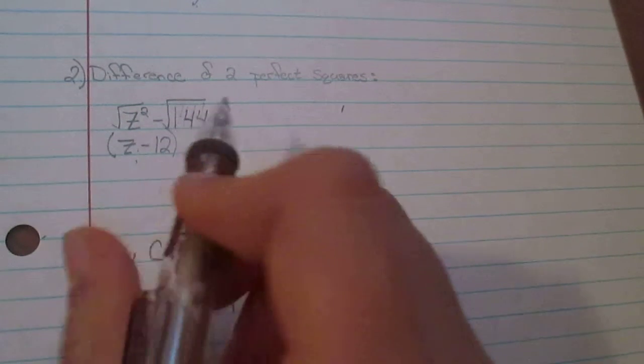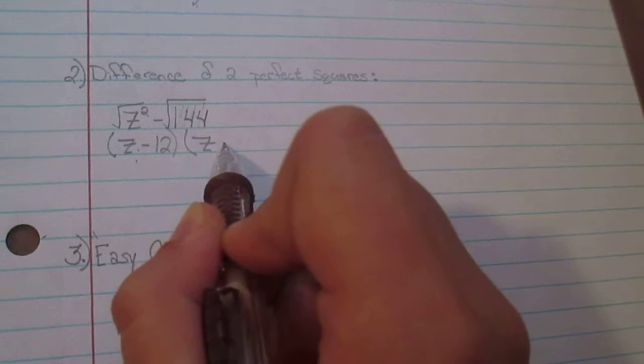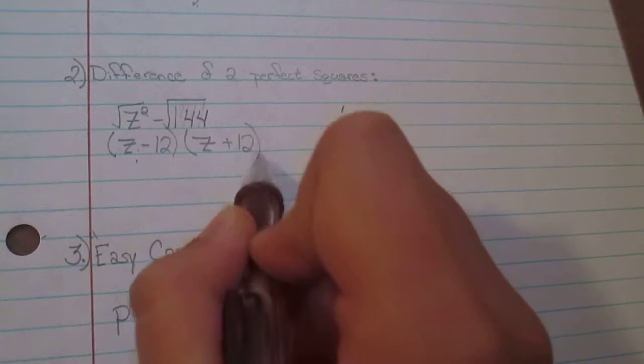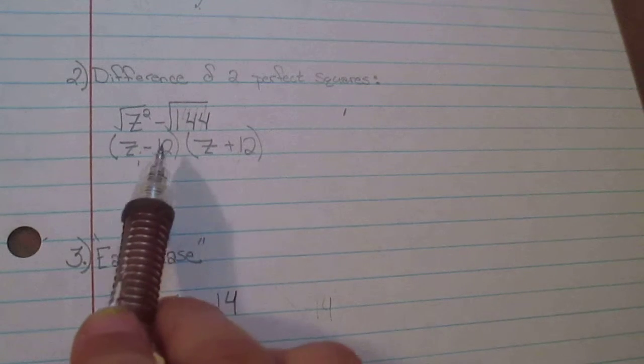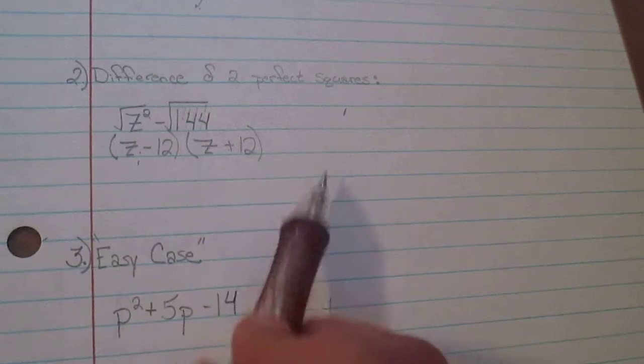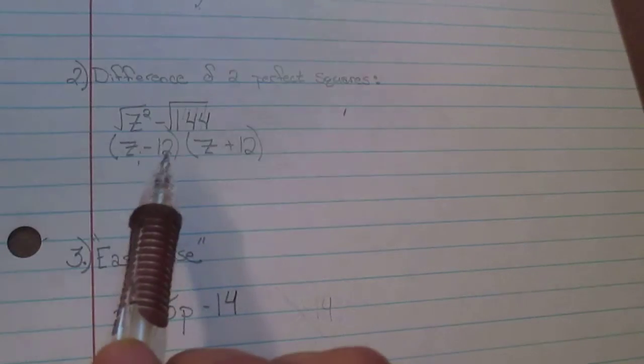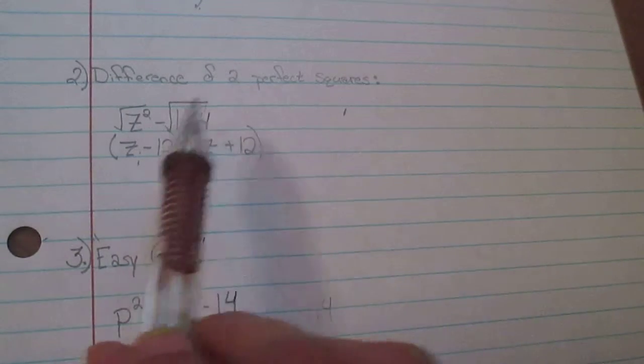And the reason you put a negative here is because you need (z - 12) and then you need (z + 12). And the reason why you need a positive here and a negative here is because when you multiply these two, when you do the box method, a negative times a positive is going to be a negative.